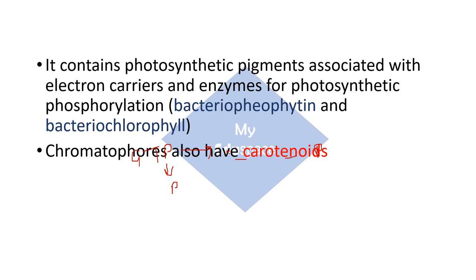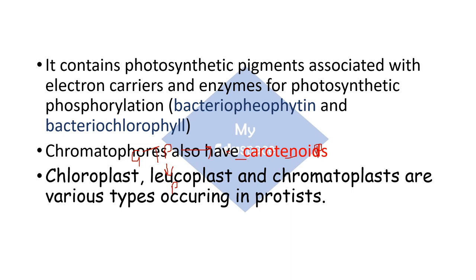Chromatophores also contain carotenoids. In the case of eukaryotic cells, structures like chloroplasts, leucoplasts, and chromatophores are various types that function similarly to the chromatophores present in prokaryotes.